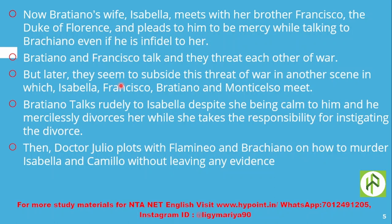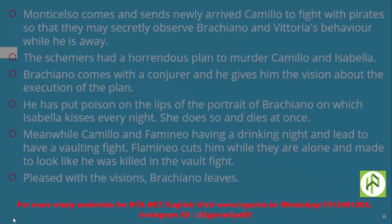Despite Isabella being calm toward him, Brachiano talks rudely to her and mercilessly divorces her, while she takes the responsibility for instigating the divorce. Then Dr. Julio plots with Flamineo and Brachiano on how to murder Isabella and Camillo without leaving evidence, since evidence would expose them to legal punishment.